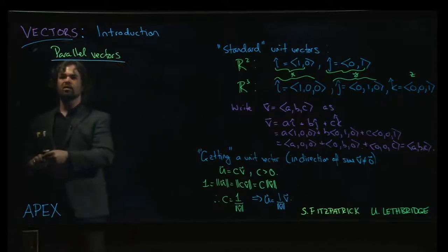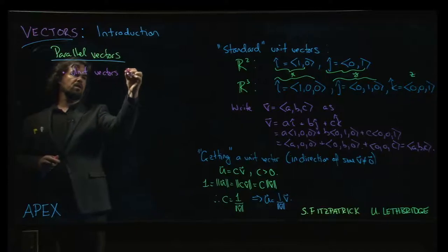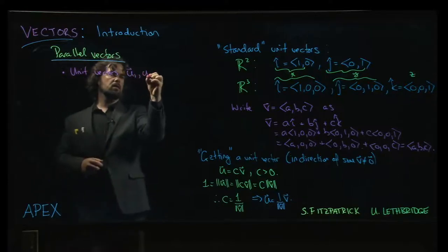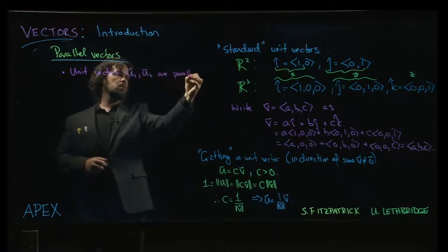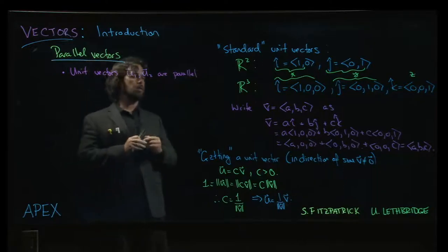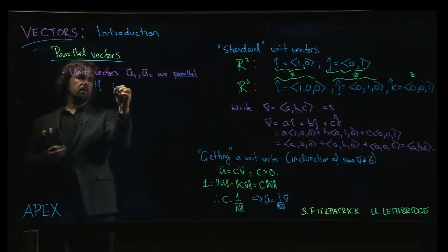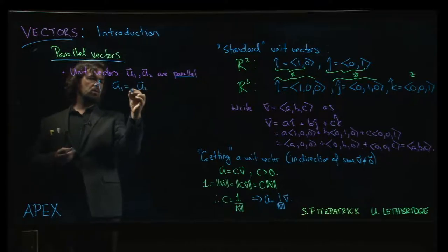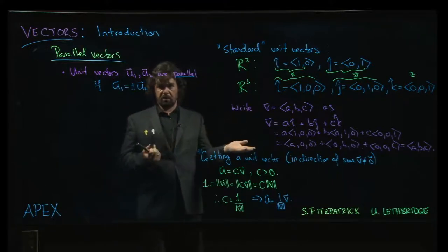So what Apex says is that if I have two unit vectors u1 and u2, unit vectors are parallel if u1 is either equal to u2 or its opposite, so plus or minus u2. So they point in either the same or the opposite direction.